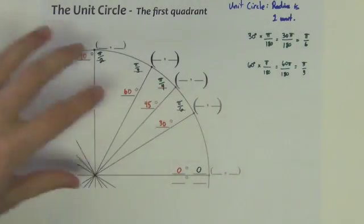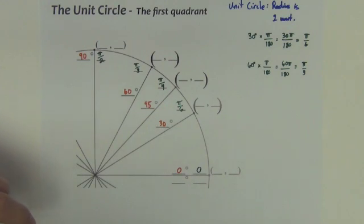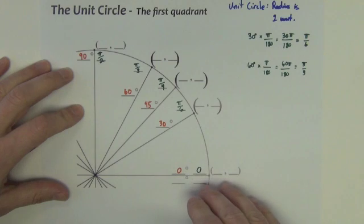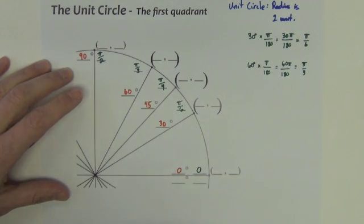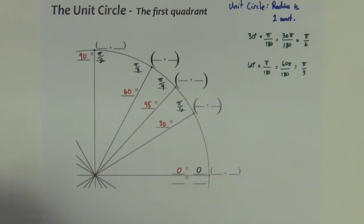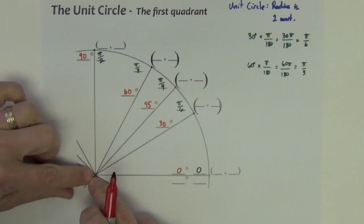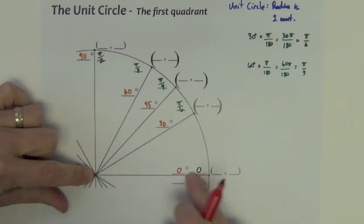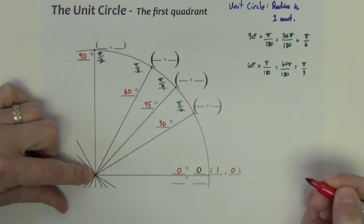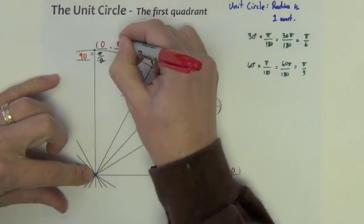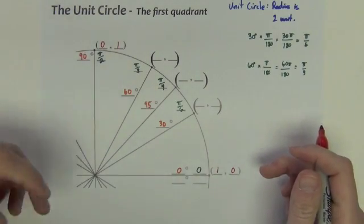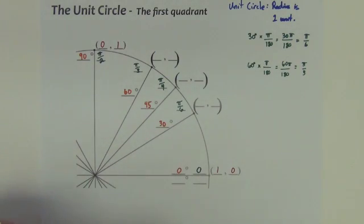Once we build up the first quadrant, you'll see the rest goes much quicker and easier. The last thing to do is the points on the edge of the circle — this is the most important part. It's how we're going to get all our sine, cosine, and tangent values for any angle. We'll do the easy ones first. Since this is a unit circle with length of one unit, the point on the x-axis is (1, 0), and the point at the top is (0, 1).